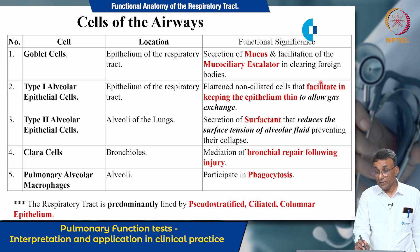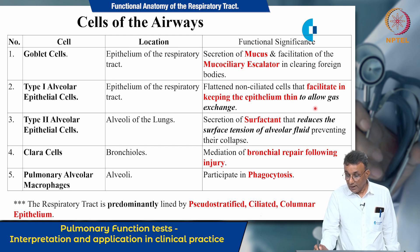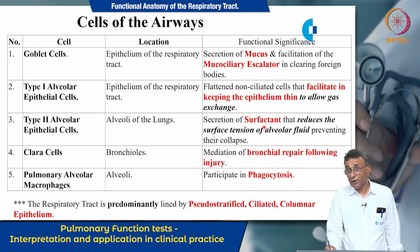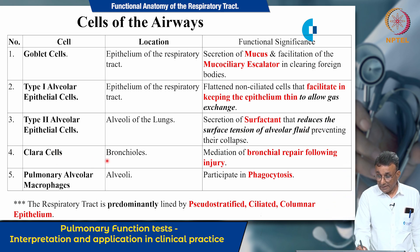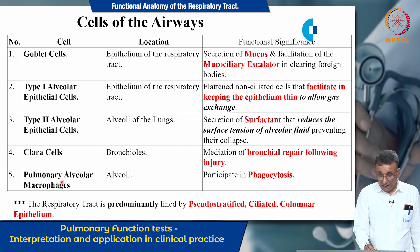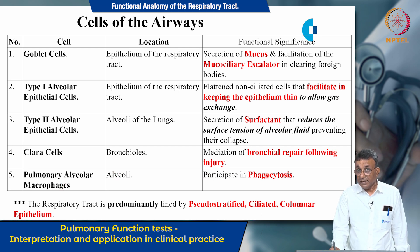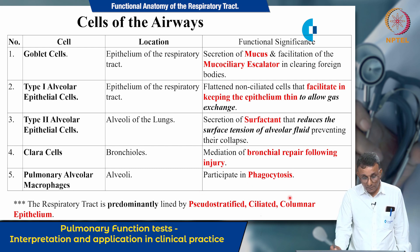Type 1 alveolar epithelial cells constitute the epithelium of the respiratory tract; these are flattened cells that keep the epithelium thin to allow gas exchange. Type 2 alveolar epithelial cells are situated in the alveoli and secrete surfactant, which reduces the surface tension of alveolar fluid, preventing collapse. Clara cells, present in the bronchioles, play a role in bronchial repair following injury. Pulmonary alveolar macrophages are the principal phagocytes of the respiratory tract. The respiratory tract is predominantly lined by pseudostratified ciliated columnar epithelium.